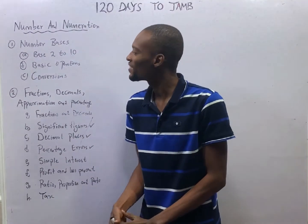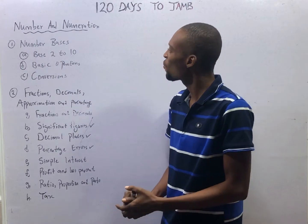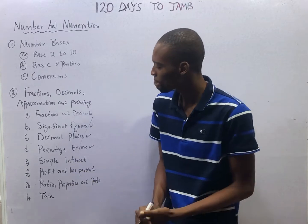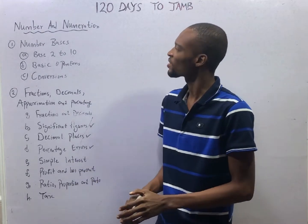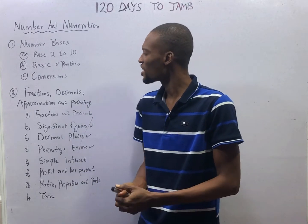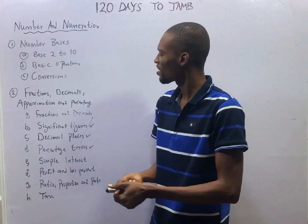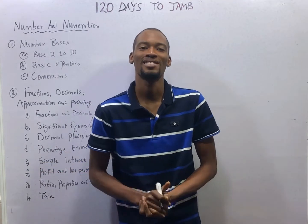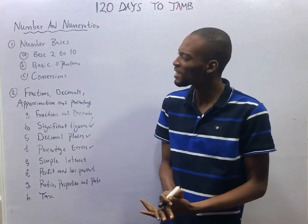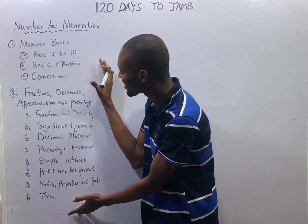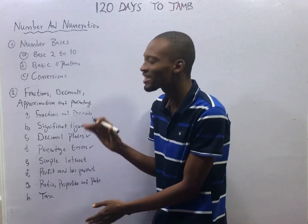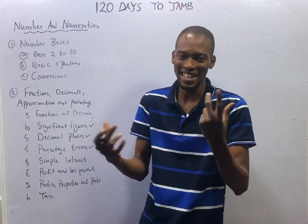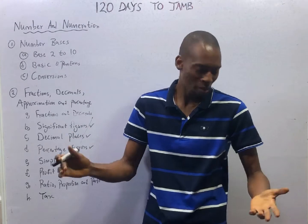This is episode 13 of the 120 Days to Jump Mathematics with Flash Isaac. We have done a lot under number and numeration, fractions, decimals, percentage, and approximations. This will be our last video under this outline for now, so we can check out other interesting topics.